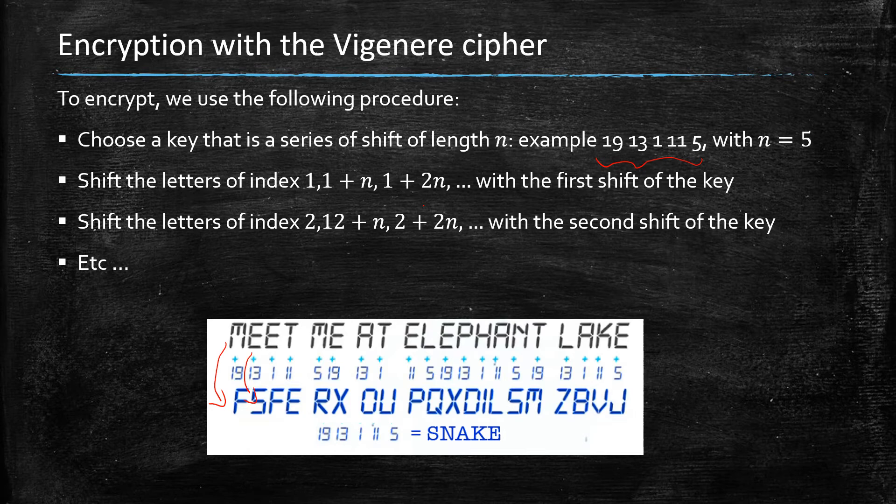So it means that M and E are not mapped according to the same shift, but then it loops back right after five shifts.